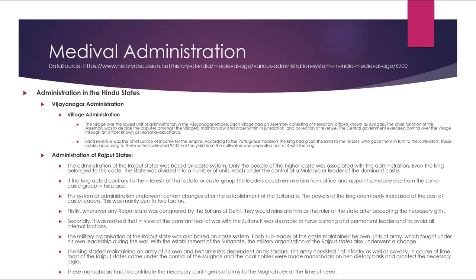This was mainly due to two factors. First, whenever a Rajput state was conquered by the sultans of Delhi, they would reinstate the ruler after accepting necessary gifts. Second, in view of the constant fear of war with the sultans, it was desirable to have a strong permanent leader and avoid internal factions. The military organization of Rajput states was also based on the caste system, with each sub-leader maintaining his own army units. With the establishment of the Sultanate and later the Mughals, Rajput nobles were made mansabdars and granted jagirs, contributing army contingents to Mughal rulers when needed.